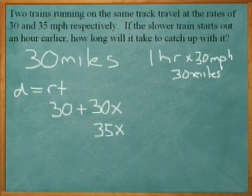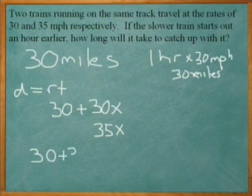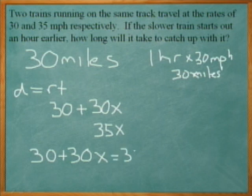Now, how do we find out when they're going to catch up to each other? They're going to catch up to each other when they have the same distance. So what we can do is set these two equations equal to each other. So we have 30 plus 30x equals 35x.